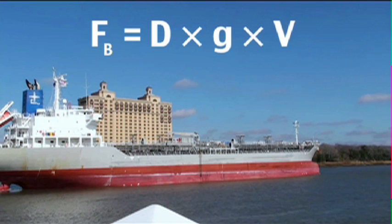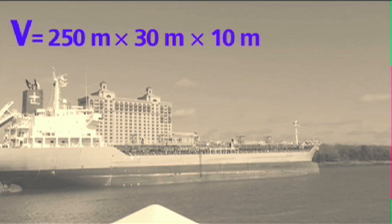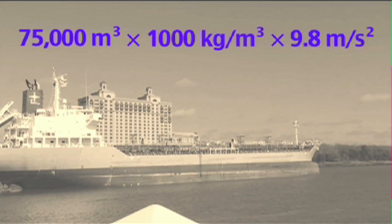Let's use Archimedes' equation to figure out how much weight a cargo ship can carry. Our cargo ship is 250 meters long, 30 meters wide, and goes 10 meters below the water surface. Multiplying these together, we know the volume displaced by the cargo ship is 75,000 cubic meters. Multiplying by the density of water and gravitational acceleration, we get that the buoyancy force acting on the ship is 735 million newtons, or about 165 million pounds.